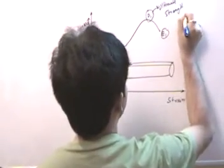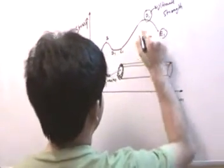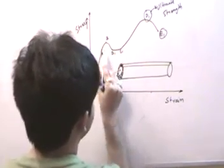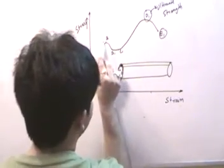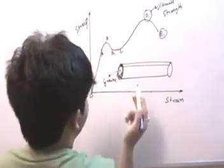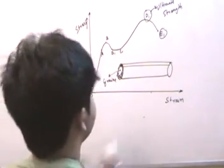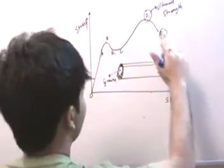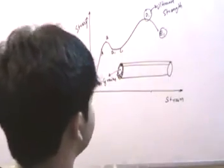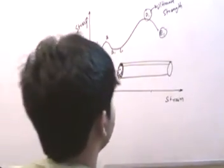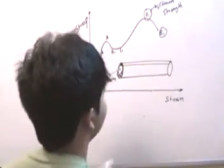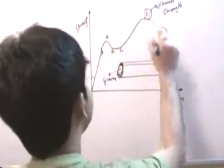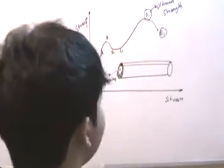After D1, the load decreases — the reason being similar to B to C1, where load decreases due to plastic stretching. At D1 the same thing happens and the load decreases. At E1 the material fails.